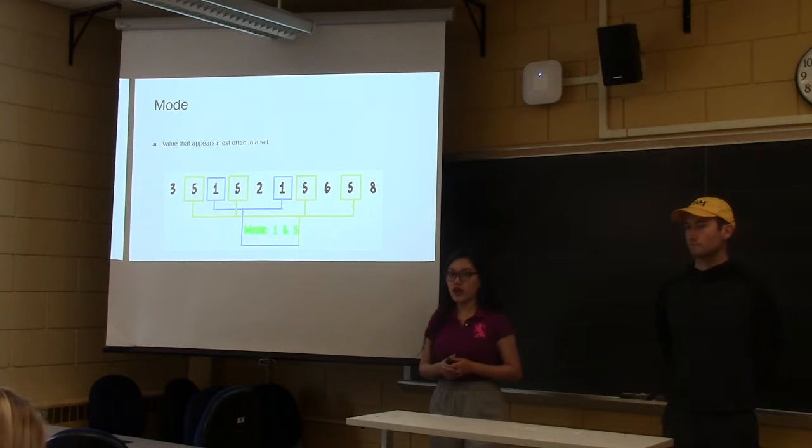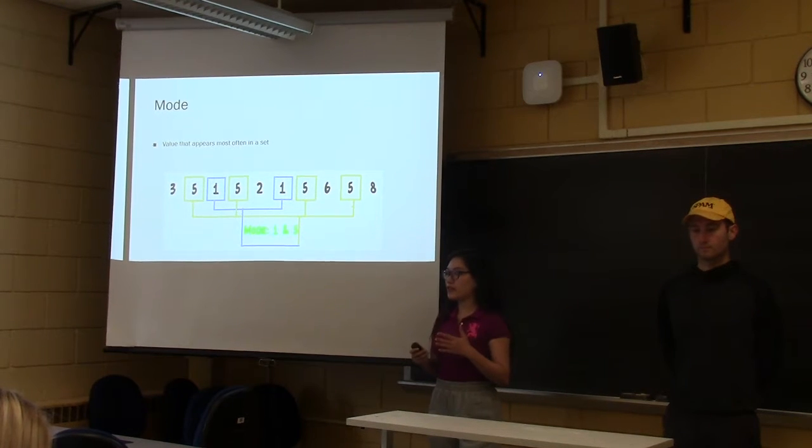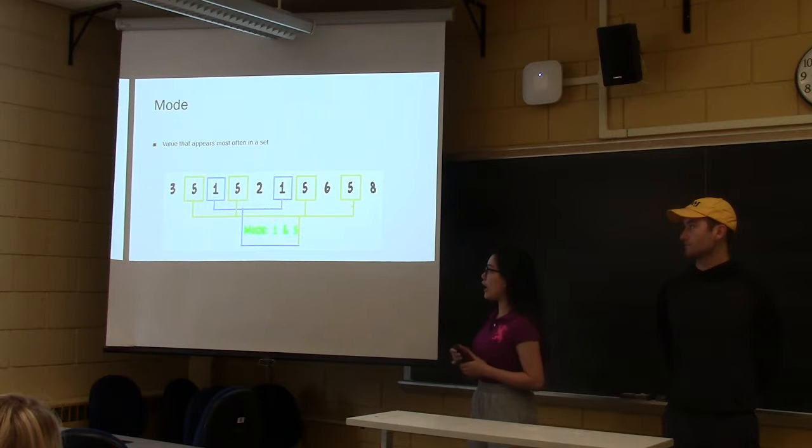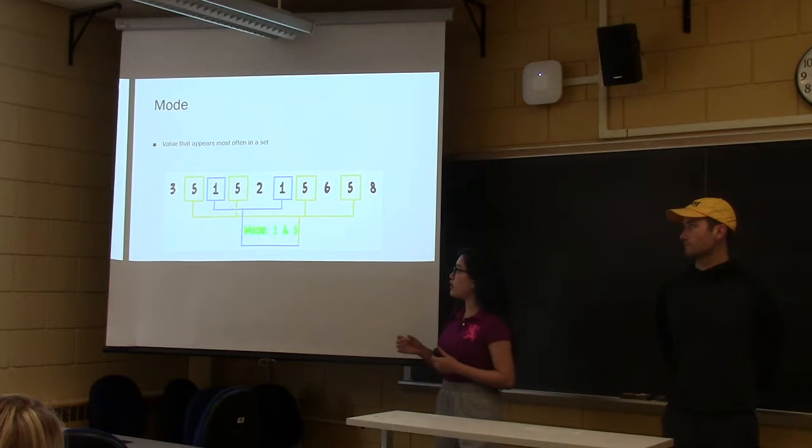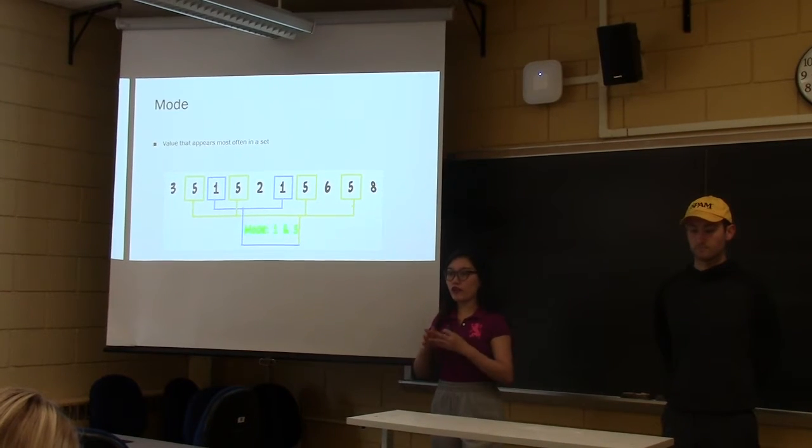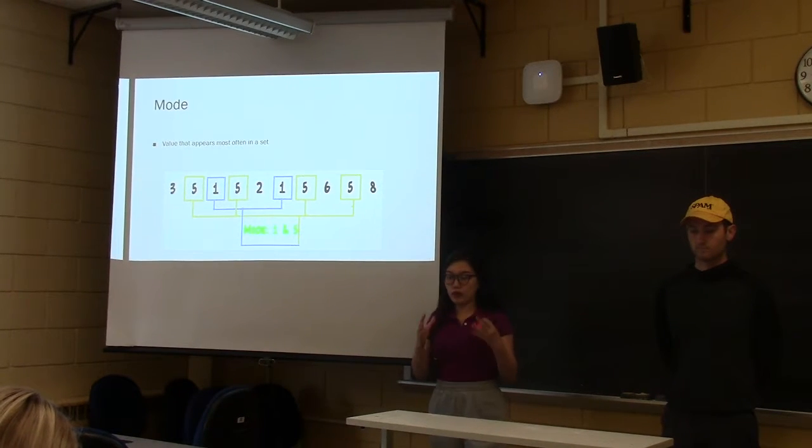So next we'll talk about the mode. The mode, basically what it is, is just the number that appears most often in your line of numbers. So for example, here we can see that we have three, five, one, and all these numbers, but five obviously appears the most, since it appears four different times, but then one also appears only twice. And so you would say that whatever number appears the most would be your mode. Let's look at some examples of that.